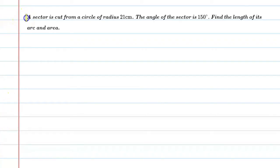Hello students, let's solve this question. A sector is cut from a circle of radius 21 centimeter. The angle of sector is 150 degree. Find the length of its arc and area.